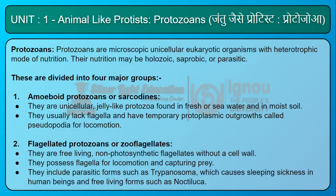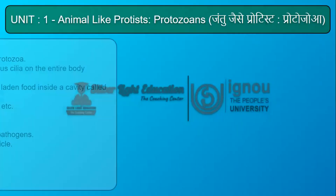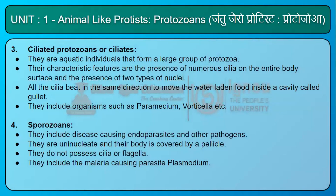Trypanosoma causes sleeping sickness in human beings, and free-living forms such as Noctiluca. Third, ciliated protozoans or ciliates. They are aquatic individuals forming a large group of protozoa. Their characteristic features are numerous cilia on the entire body surface and two types of nuclei. All cilia beat in the same direction to move water-laden food inside a cavity called the gullet. They include organisms such as Paramecium and Vorticella.